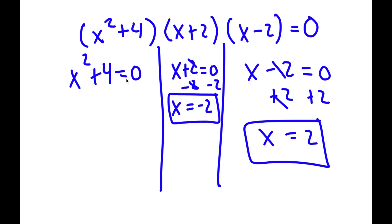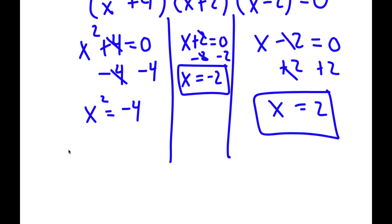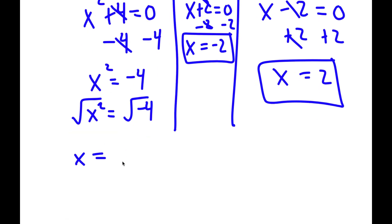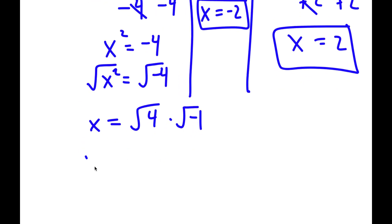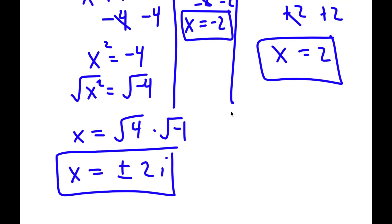And now for x squared plus 4 equals 0, to solve this, I'm going to subtract 4 on both sides and get x squared is equal to negative 4. If I take the square root on both sides, I get the square root of x squared equals square root of negative 4. The square root of x squared is x, and the square root of negative 4 can be rewritten as the square root of 4 times the square root of negative 1. The square root of negative 1 equals i, so I get positive or negative 2i. So these are my four solutions.